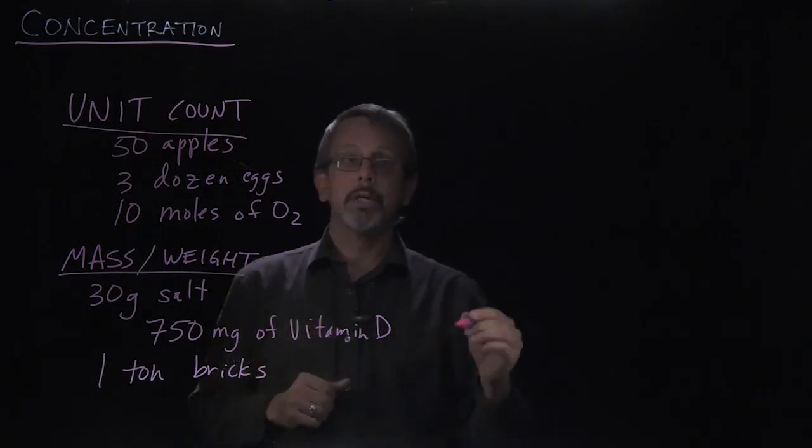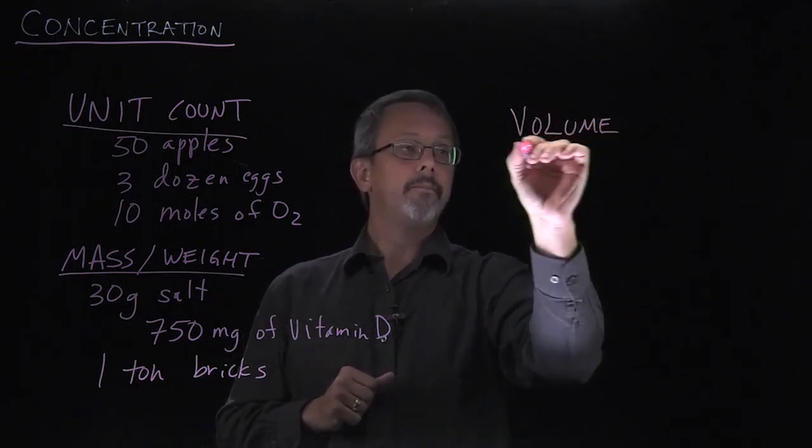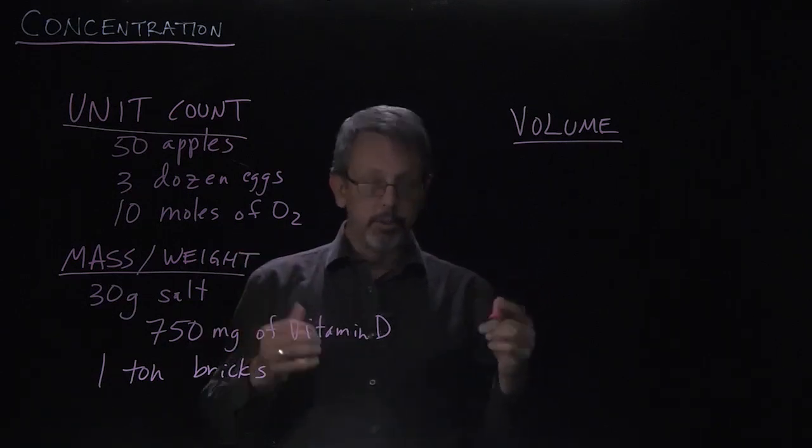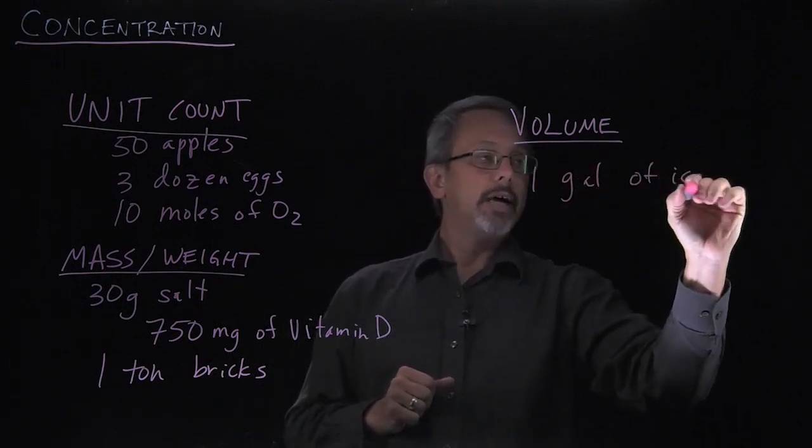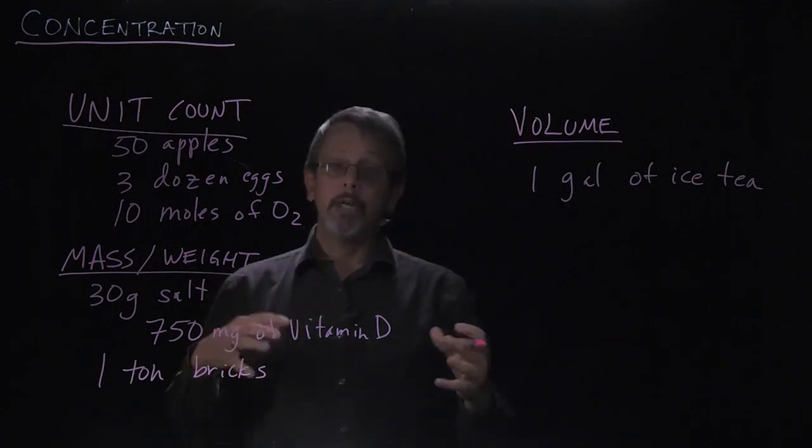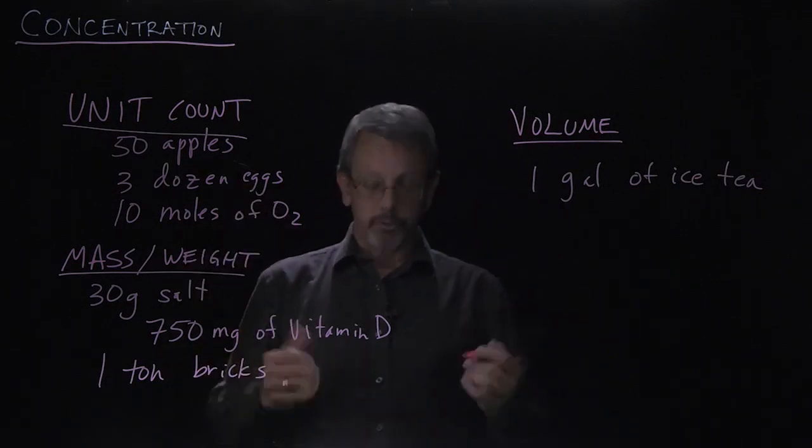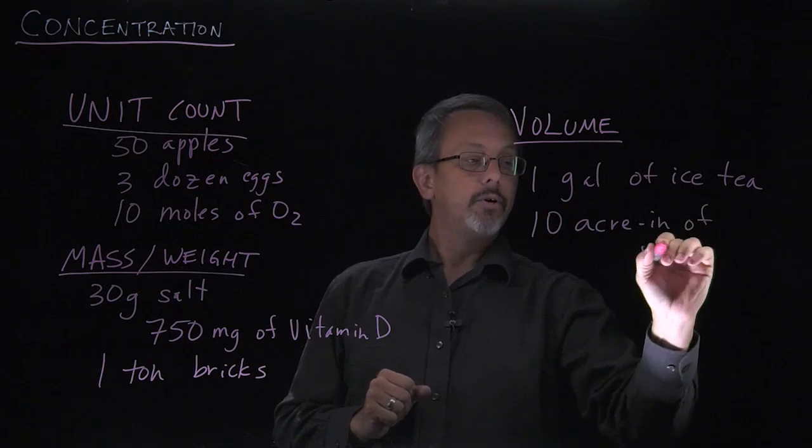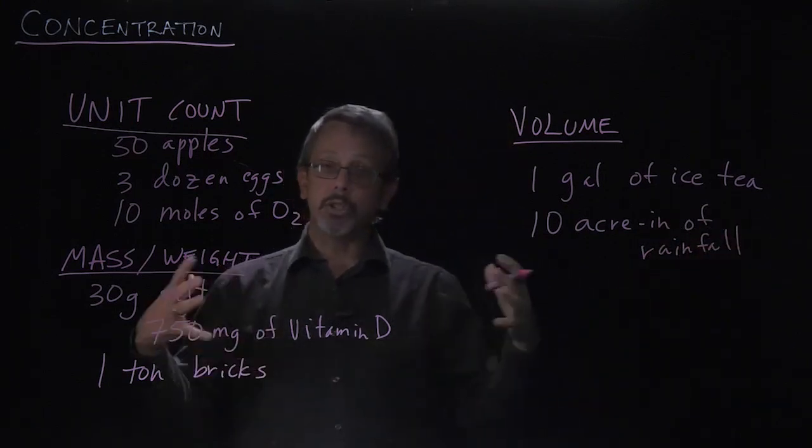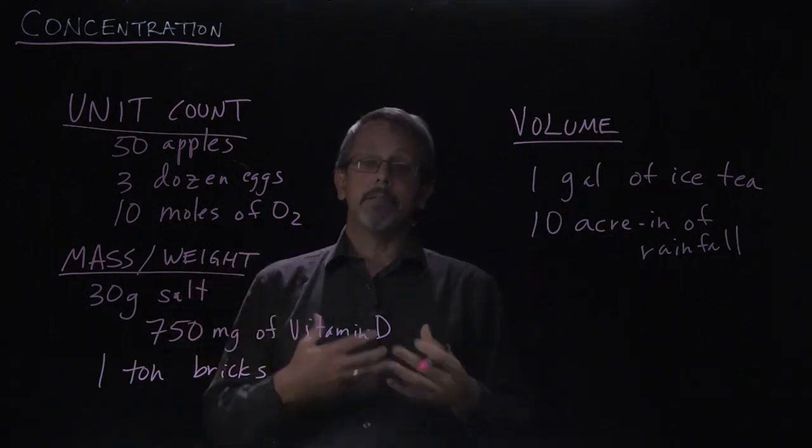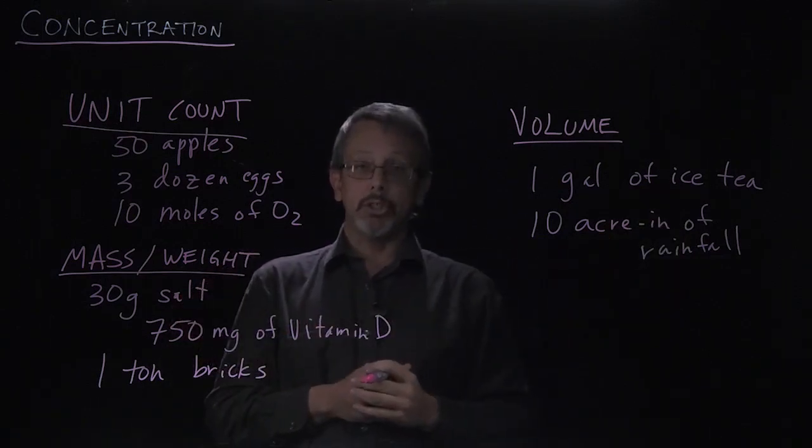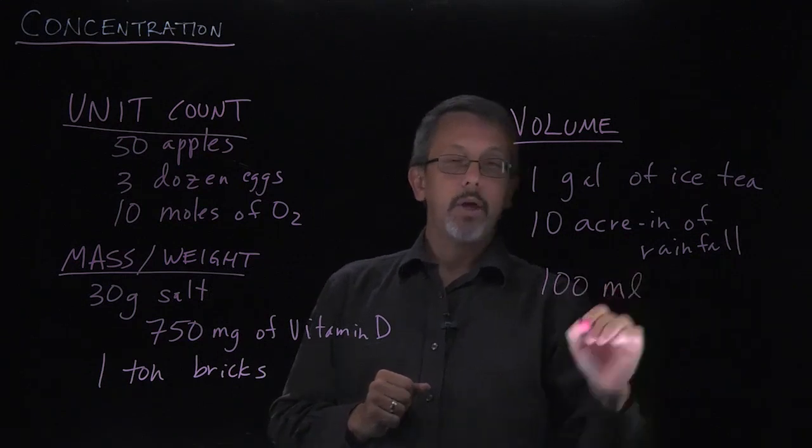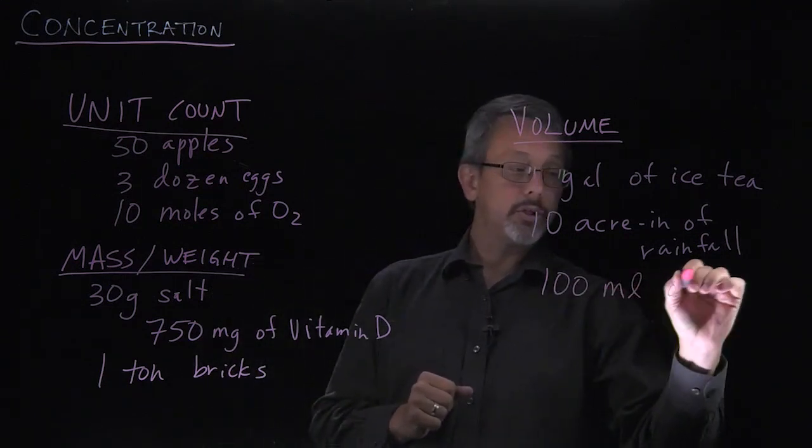And our third one is generally using volume. In volume, we're measuring the amount of space something takes up. For example, one gallon of iced tea, or 10 acre inches of rainfall, which is the amount of volume that an inch of rain over 10 acres would take up. Or a more simple version that we might be familiar with, maybe we have a graduated cylinder and we measure 100 milliliters of water.